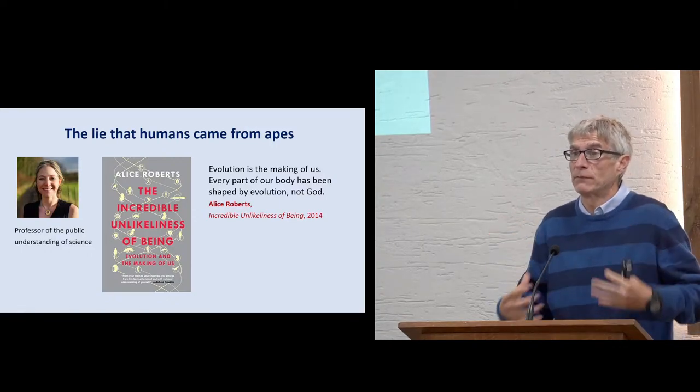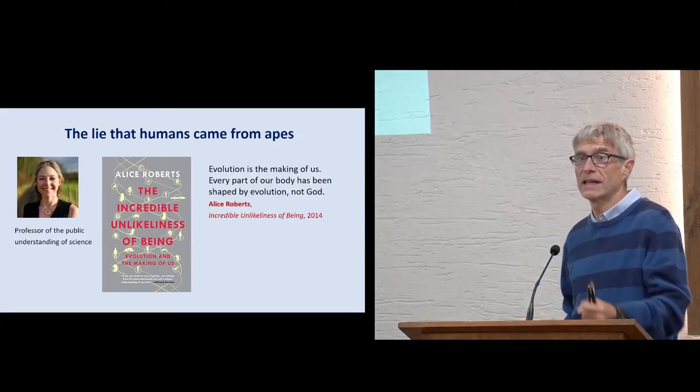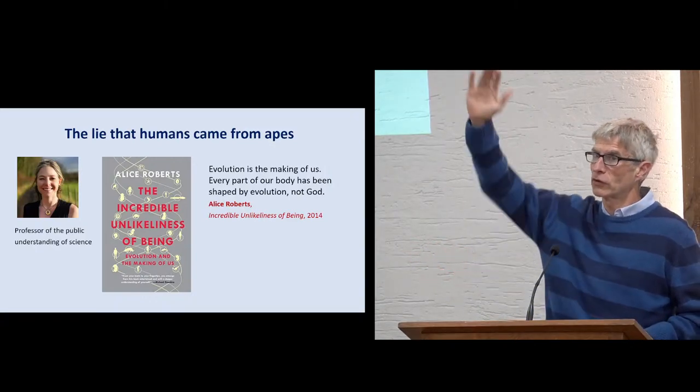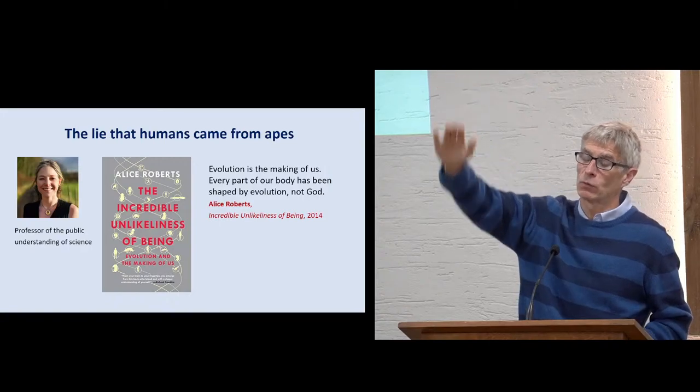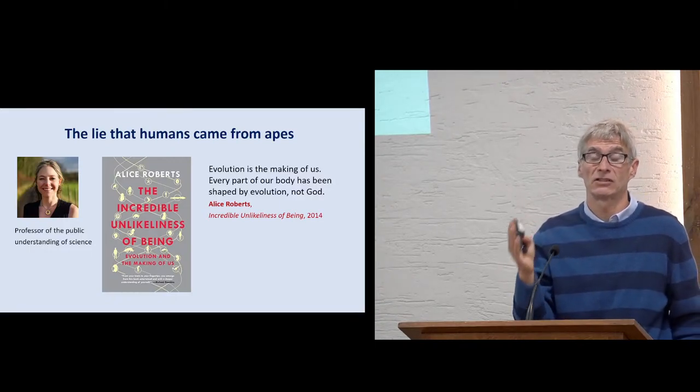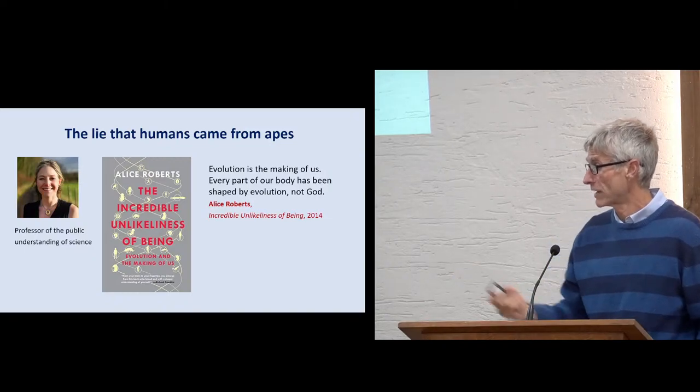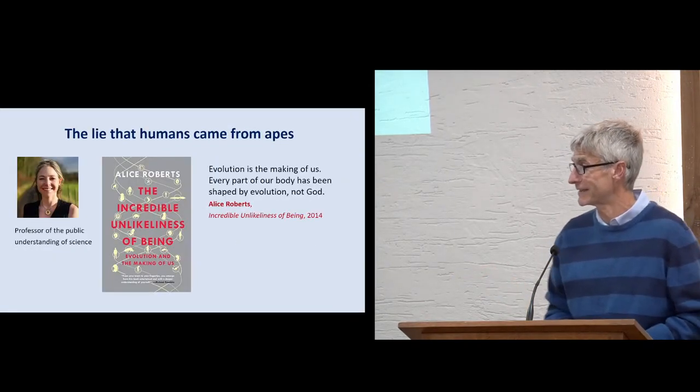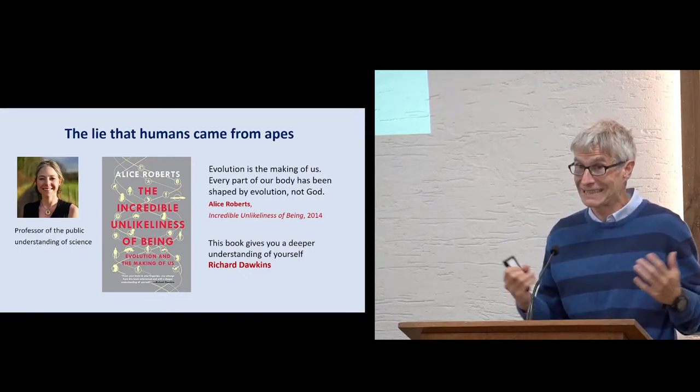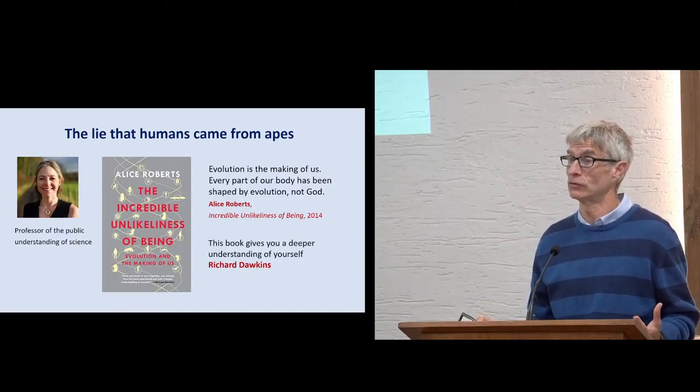And then she says, we have evolved, men have evolved to rape women. We've evolved to fight, survive with the fittest. And she says, forget what the Bible says. We're not a little below the angels there, we're a little above the beasts down there. We are beasts and animals and apes. And that's what she teaches, children and students at university. Unsurprisingly, Richard Dawkins says, this book gives you a deeper understanding of yourself. If you want to understand yourself, you've got to understand you are an ape. This is the battle we are in today, what our children are being taught.